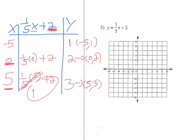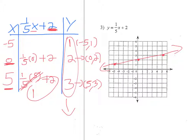Let's plot these points. Negative 5, 1 — I go to the left 5 and up 1, right there. There's (0, 2) — I just go up 2 units. And then (5, 3) — I go to the right 5 and up 3, and it matches up. So here we have our line going up left to right. You'll also notice the y values in the x-y chart go up by 1, and the reason is because the numerator is 1. For number 1, it went down by 1 because the numerator was negative 1. So this is a shortcut so we don't have to deal with fractions — the key is plugging in multiples of the denominator, the bottom number in the fraction.